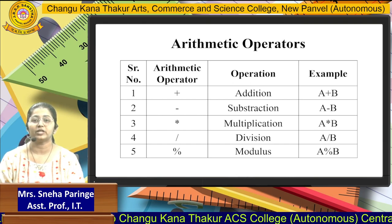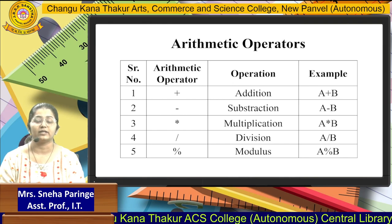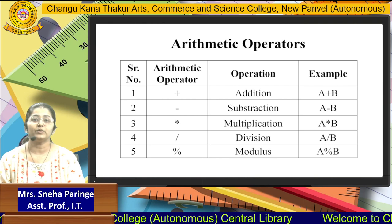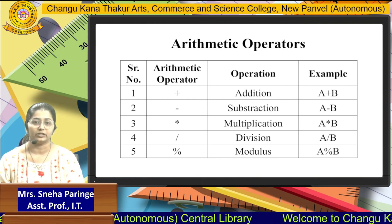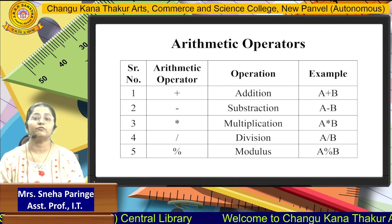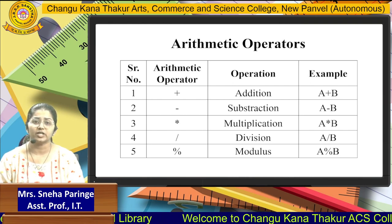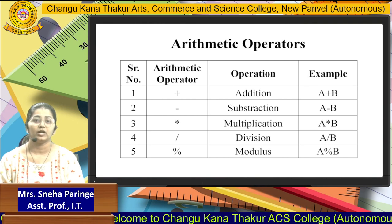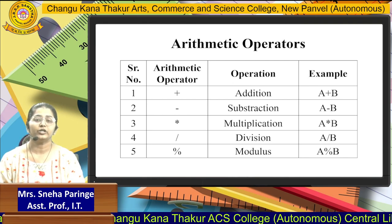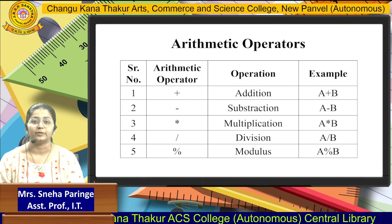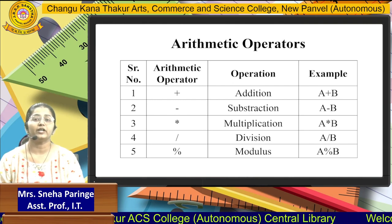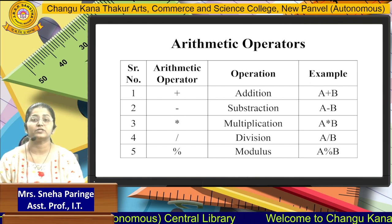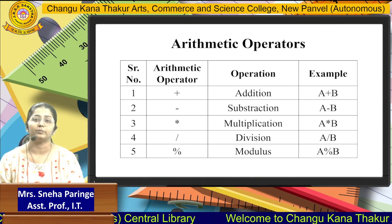For example, we consider A is 10 and B is 5. In the first example, A plus B, that is 10 plus 5, will become 15 using the Addition Operator. If we use the Subtraction Operator, it will give the answer 5, as 10 minus 5. For multiplication, 10 into 5 will become 50. In the division, 10 divided by 5 will become 2. And in the modulus, since 10 is divisible by 5, the remainder will be 0.